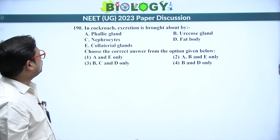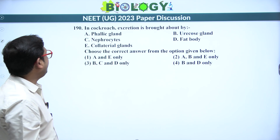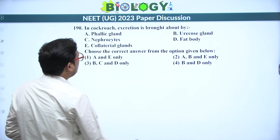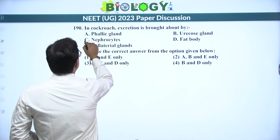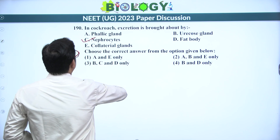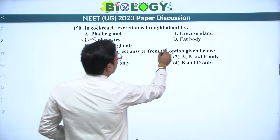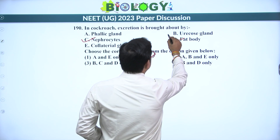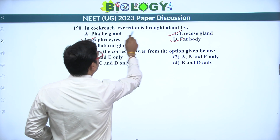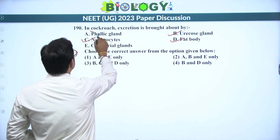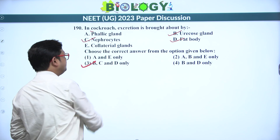Next: in cockroach, excretion is brought about by which structures? Nephrocytes — yes. Collateral glands form the cocoon — not excretory. Fat body — yes. Uricose glands — yes, in males. Since the question says 'in cockroach' without specifying male or female, B, C, and D are the excretory structures. Answer is 3.